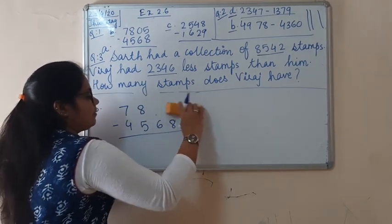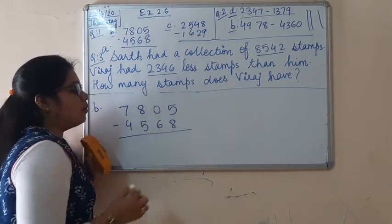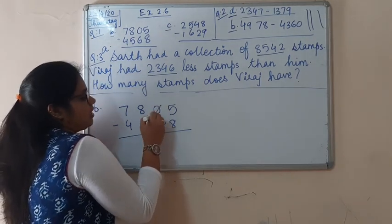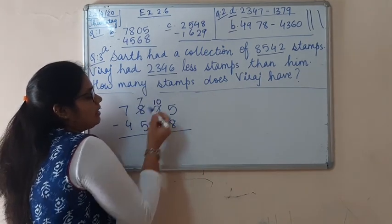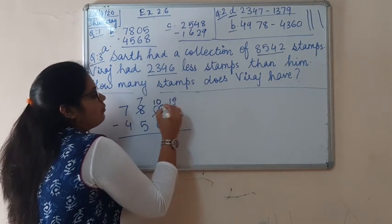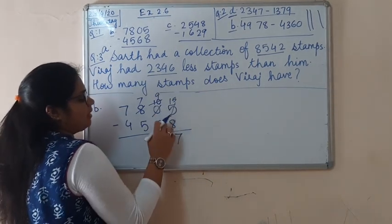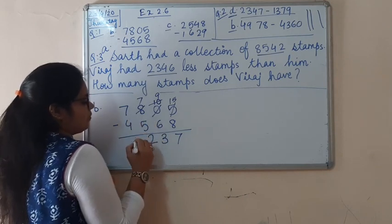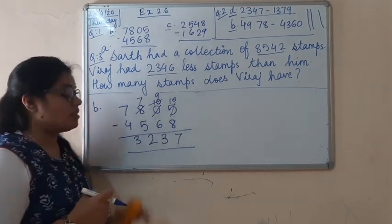But here the case is different — we have 0. Zero itself does not have anything to give, so we should borrow 1 for 0 first. This one came from 8, so now it becomes 10. We can borrow 1 for 5 from 10, making it 15. So 15 minus 8 is 7. 9 minus 6 is 3. 7 minus 5 is 2. 7 minus 4 is 3. Now you can understand why we put 9 when 0 comes — this is the reason.